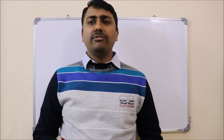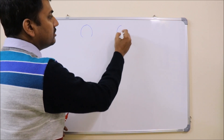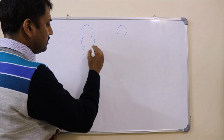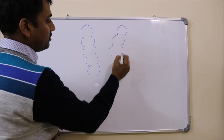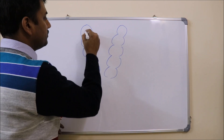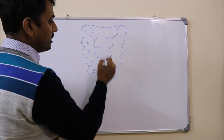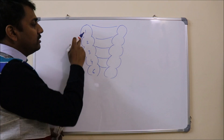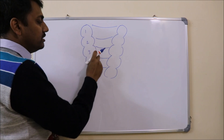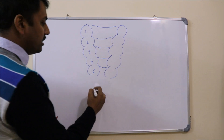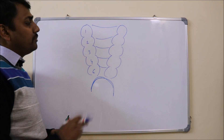Let us first see the deployment of pharyngeal arches. This is the first pharyngeal arch, second, third, fourth, and sixth — the fifth has been obliterated. These are the pharyngeal clefts: first, second, third, and fourth. These are the pouches: first, second, third, and fourth pharyngeal pouches. And this is the epicardial bulge or epicardial ridge.